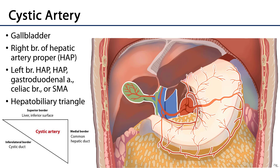It's of great consequence that one understands the origin of the cystic artery. The cystic artery's most common origin is from the right branch of the hepatic artery proper. If it doesn't originate from there, there are several other sources: it may come from the left branch of the hepatic artery proper, or it may come from the hepatic artery proper itself.